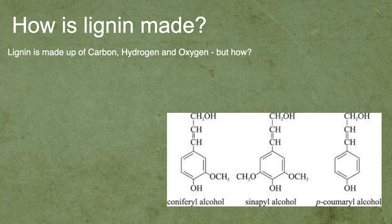Lignin is made up of carbon, hydrogen, and oxygen. Like a lot of molecules, they're made of carbon, hydrogen, and oxygen, and the reason they have different properties is because of how they're put together. These are the structures of the three different alcohols that make up lignin — C is for carbon, H is for hydrogen, and O is for oxygen.